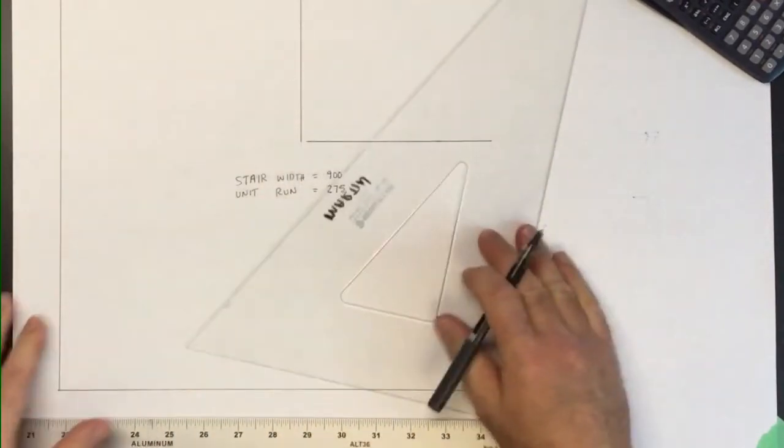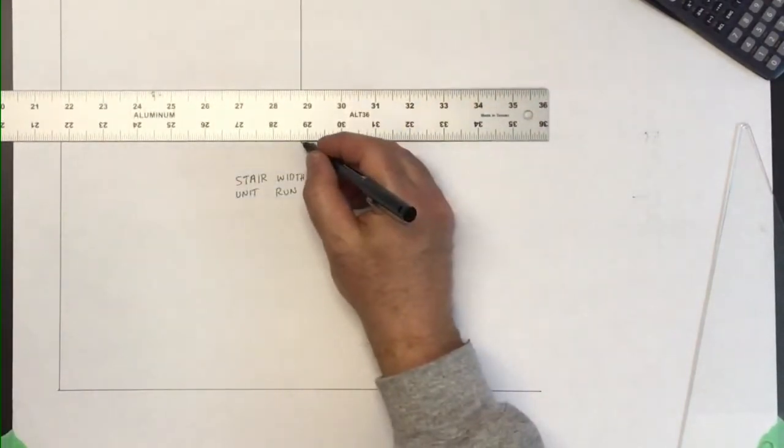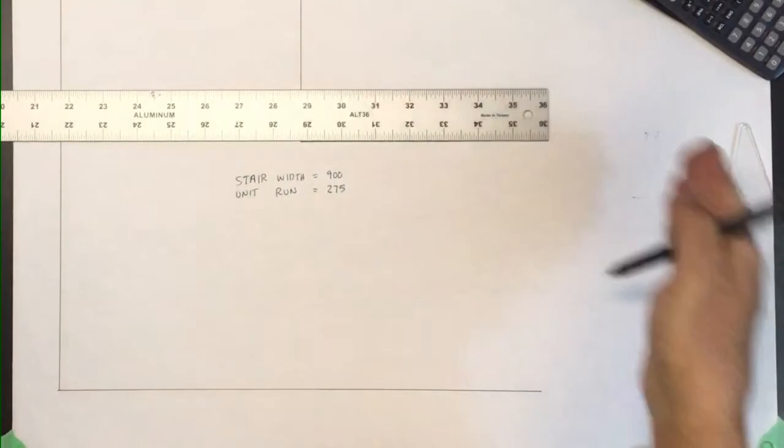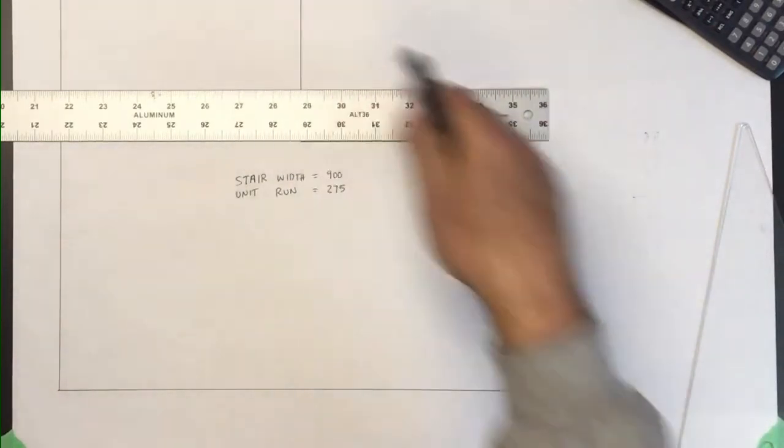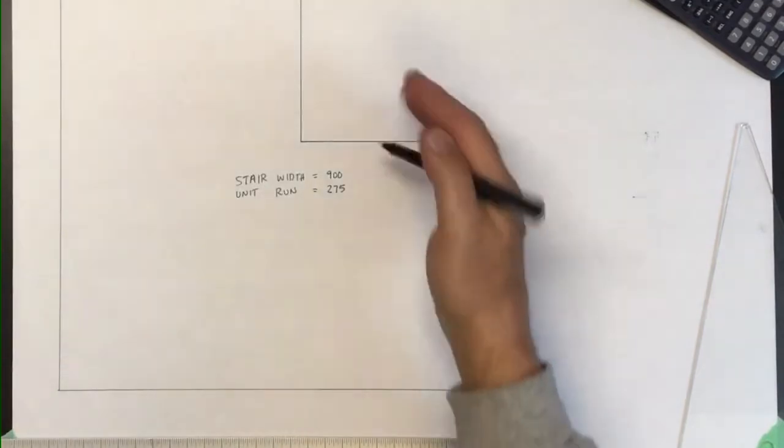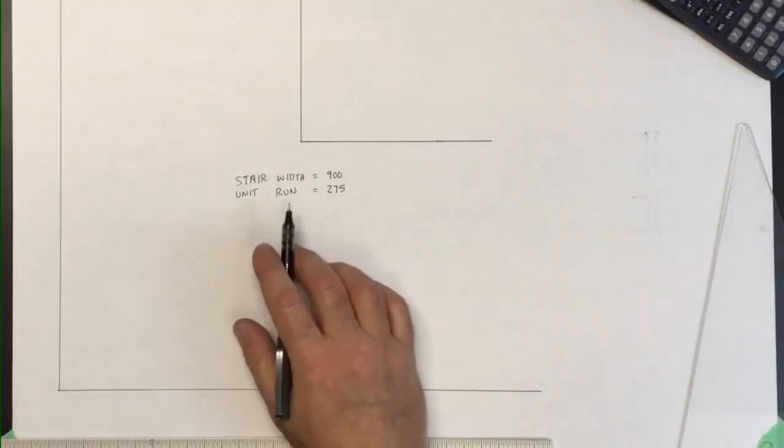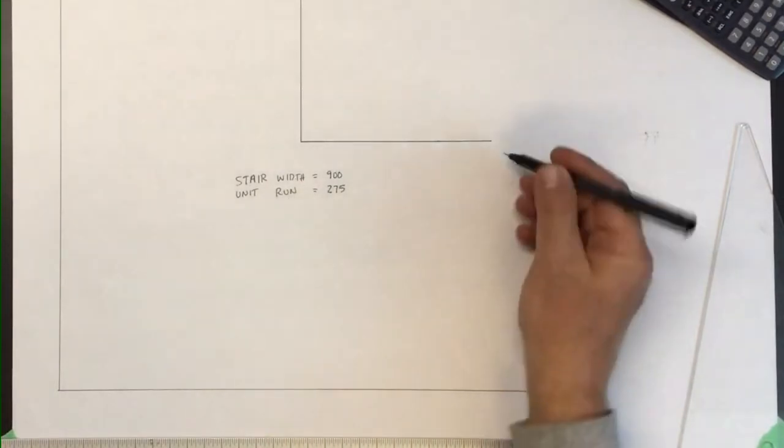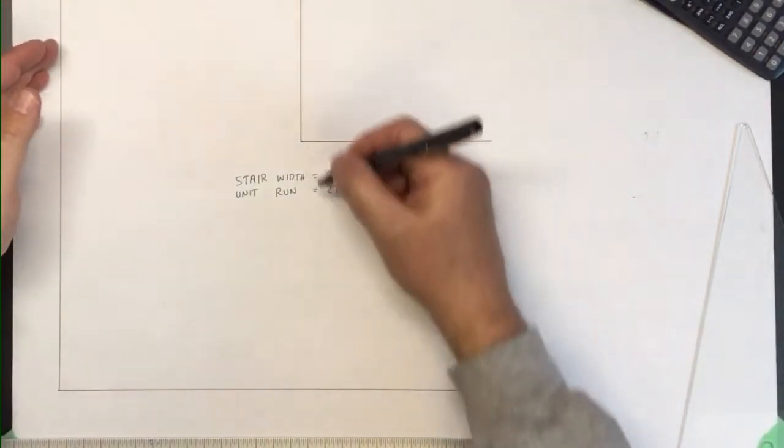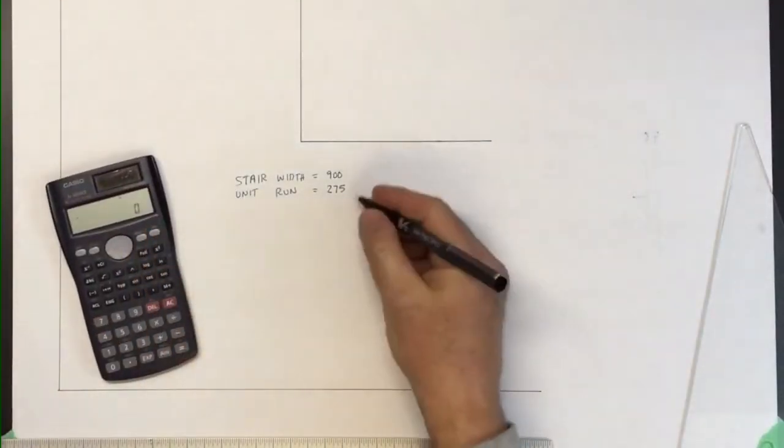Probably won't fit quite this much onto your layout, so don't worry if you don't get all past the outside of the flight coming down and the flight coming up. Don't worry too much about that. We're just really concerned about this corner here. So the parameters for the stair are that the width is 900, which I have here and here. The unit run will be 275.